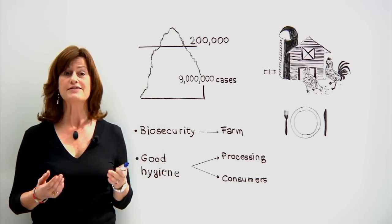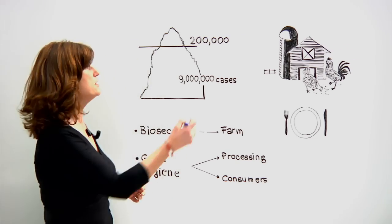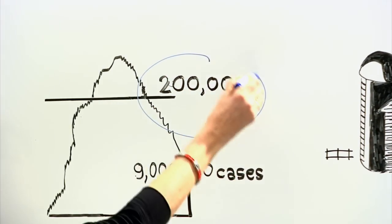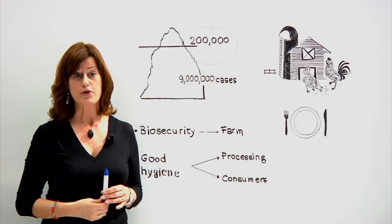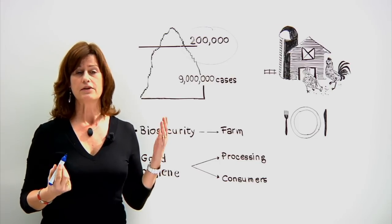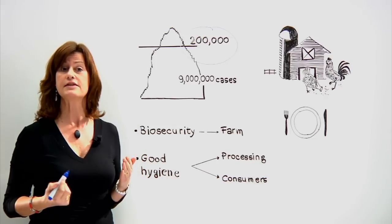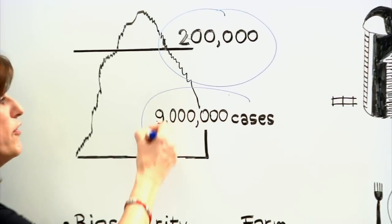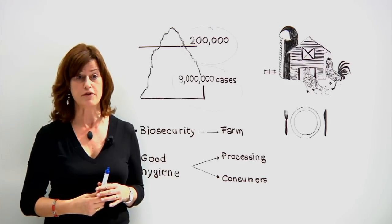Campylobacteriosis is the most reported foodborne disease in the European Union, which accounts for around 200,000 reported cases every year. But the true number of cases is estimated to be about 9 million European citizens becoming infected annually.